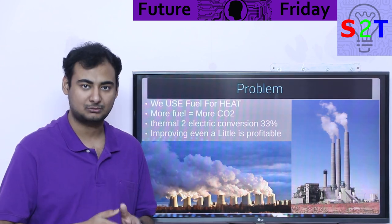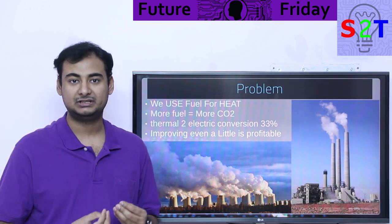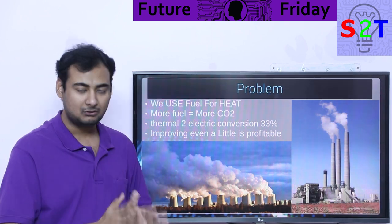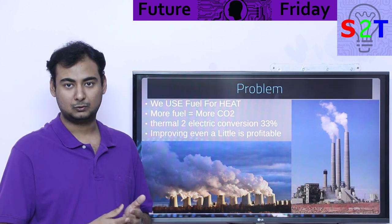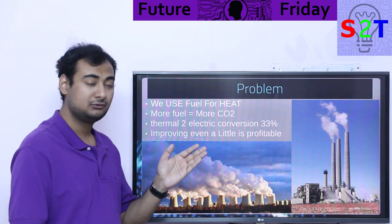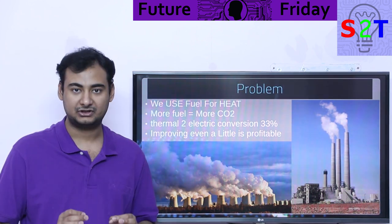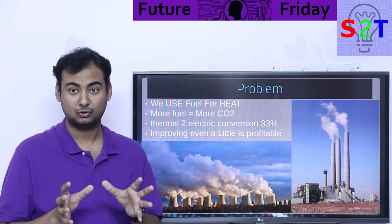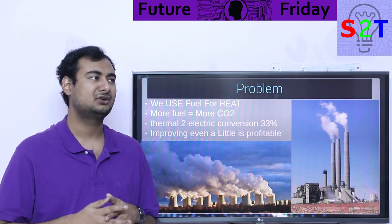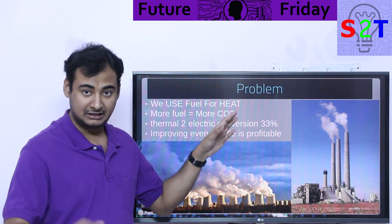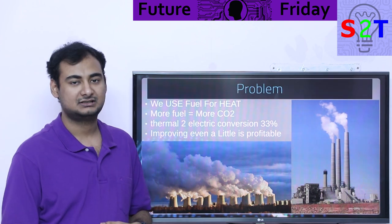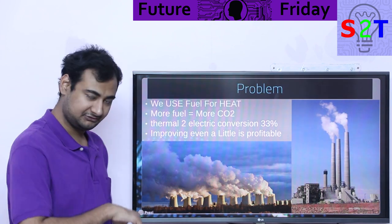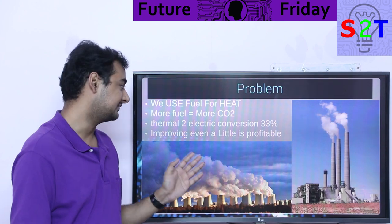We use fuel in order to make heat — no matter which thermal plant you're talking about, whether coal, nuclear, crude oil, or gas — they all produce carbon dioxide. The more fuel we use, the more carbon dioxide it produces. Our conversion efficiency is poor: you do not get anywhere near 100% or even 90%. On average, you're getting around 33%, and the best-case expensive plants achieve around 43%.